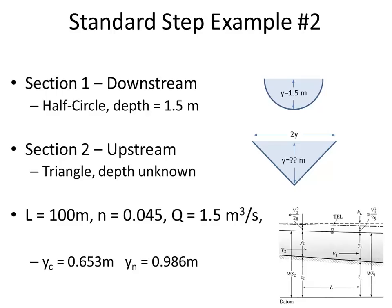The delta-z and the length give us S-naught, the slope of the channel. The length between the two sections is 100 meters. The only other piece of information is the coefficient of contraction C, which is 0.2. Apply the spreadsheet structure you've developed with this new information — you'll need to think about the area of a half circle and the area of a triangle. Take about 20 minutes to work through that.